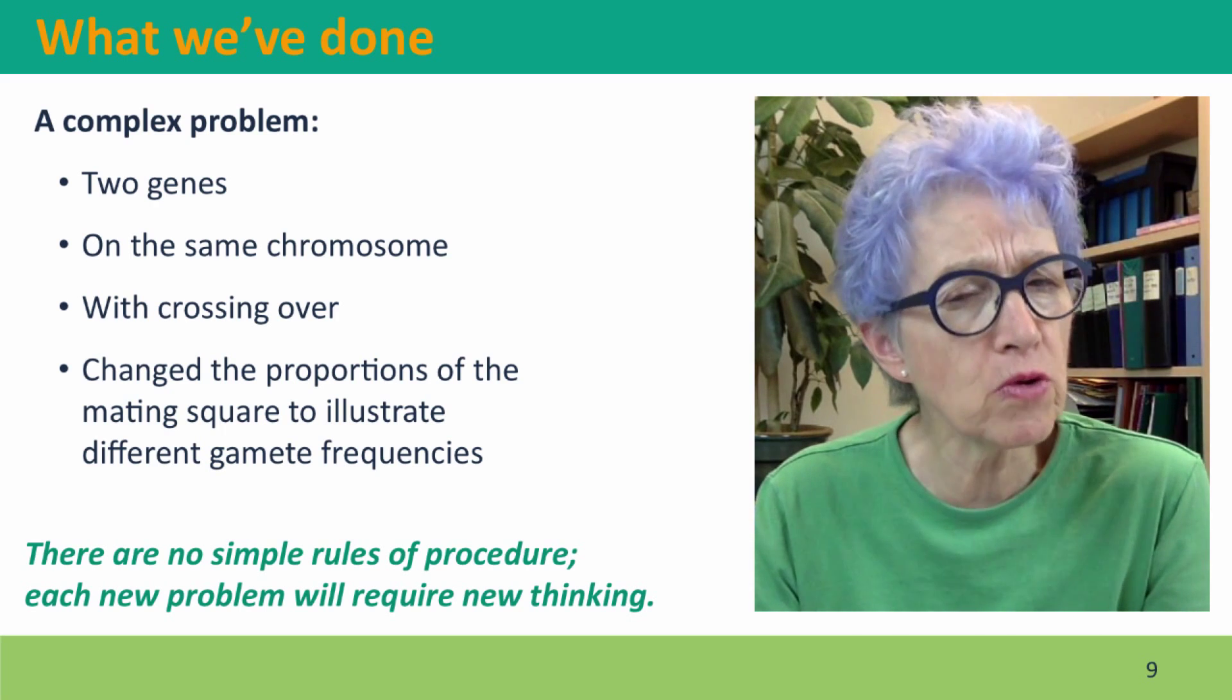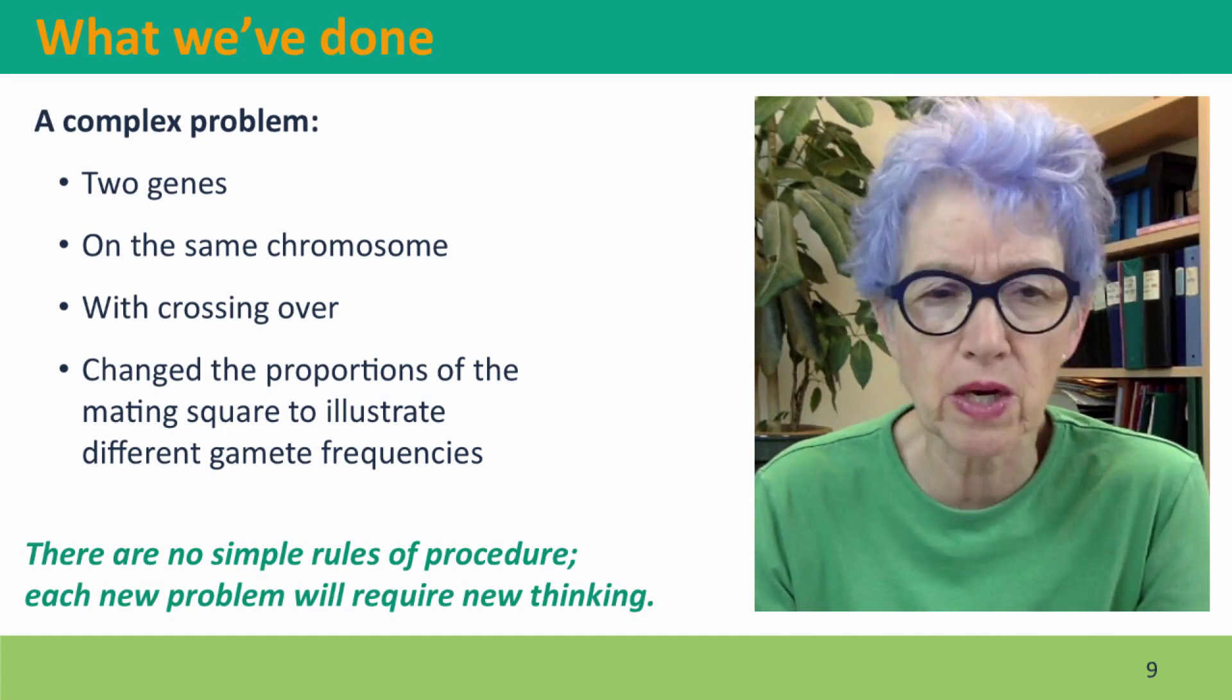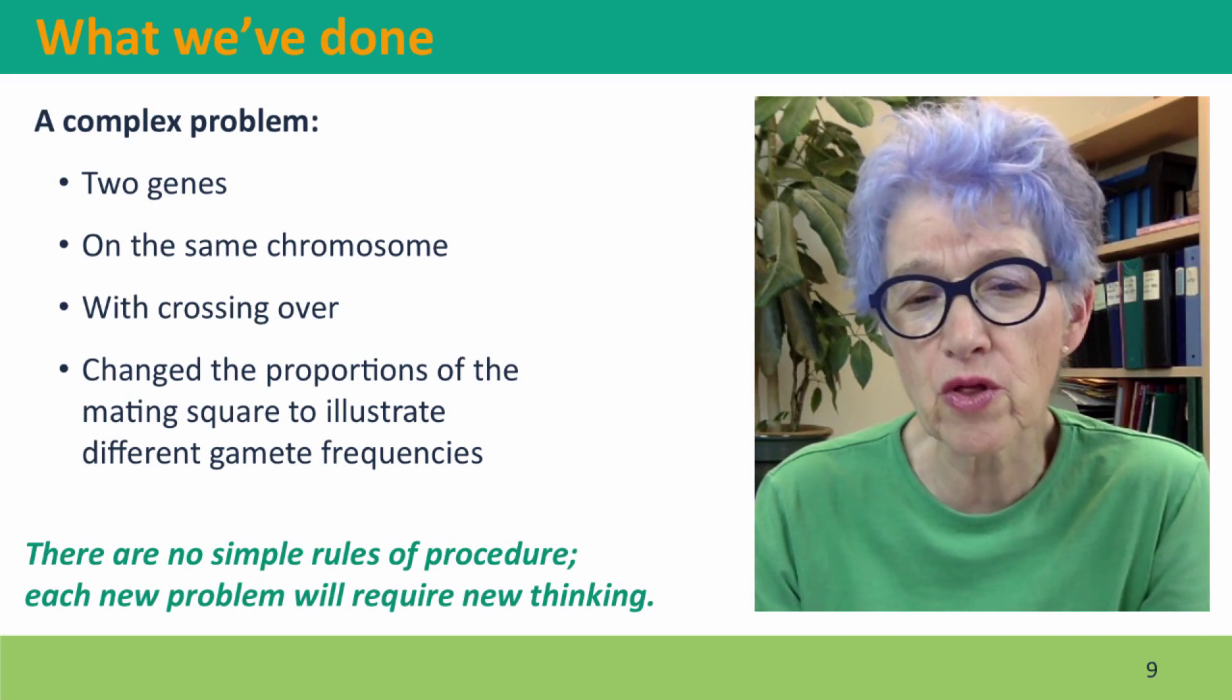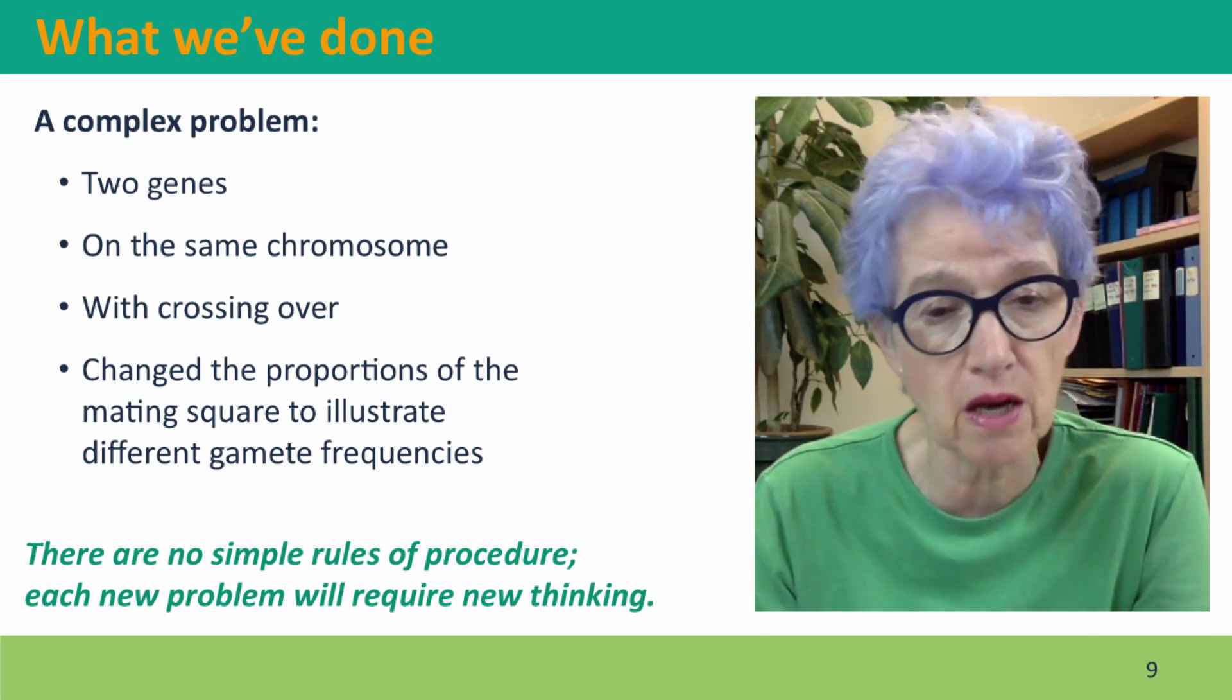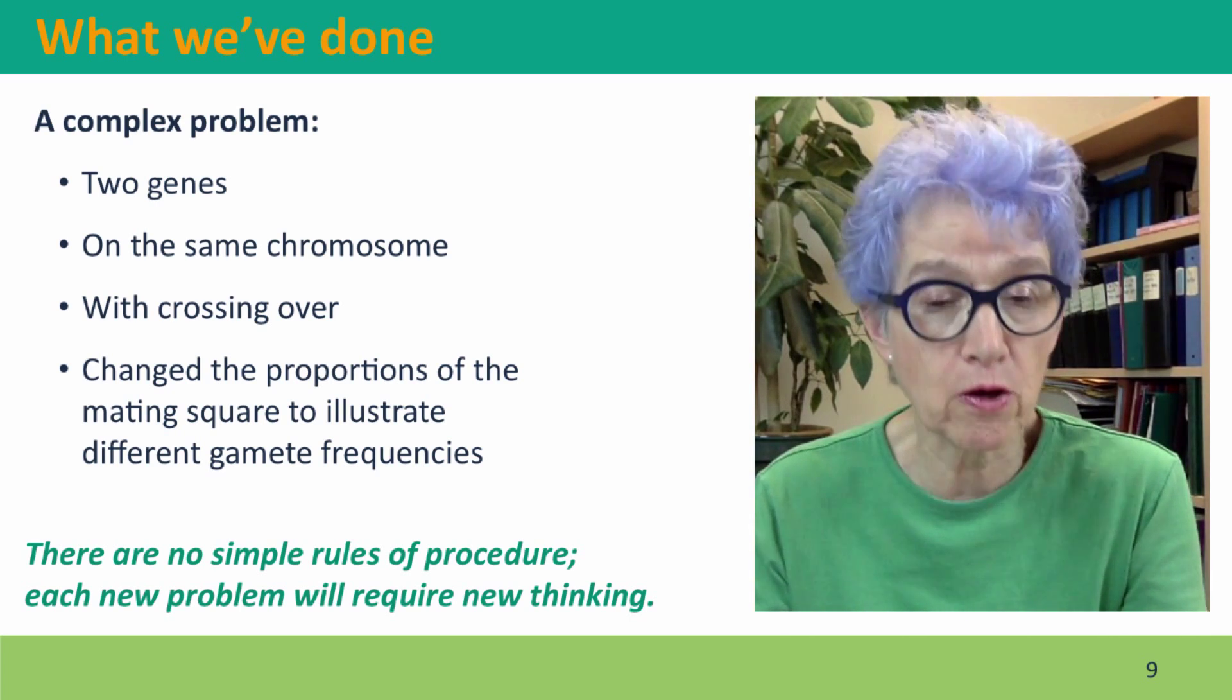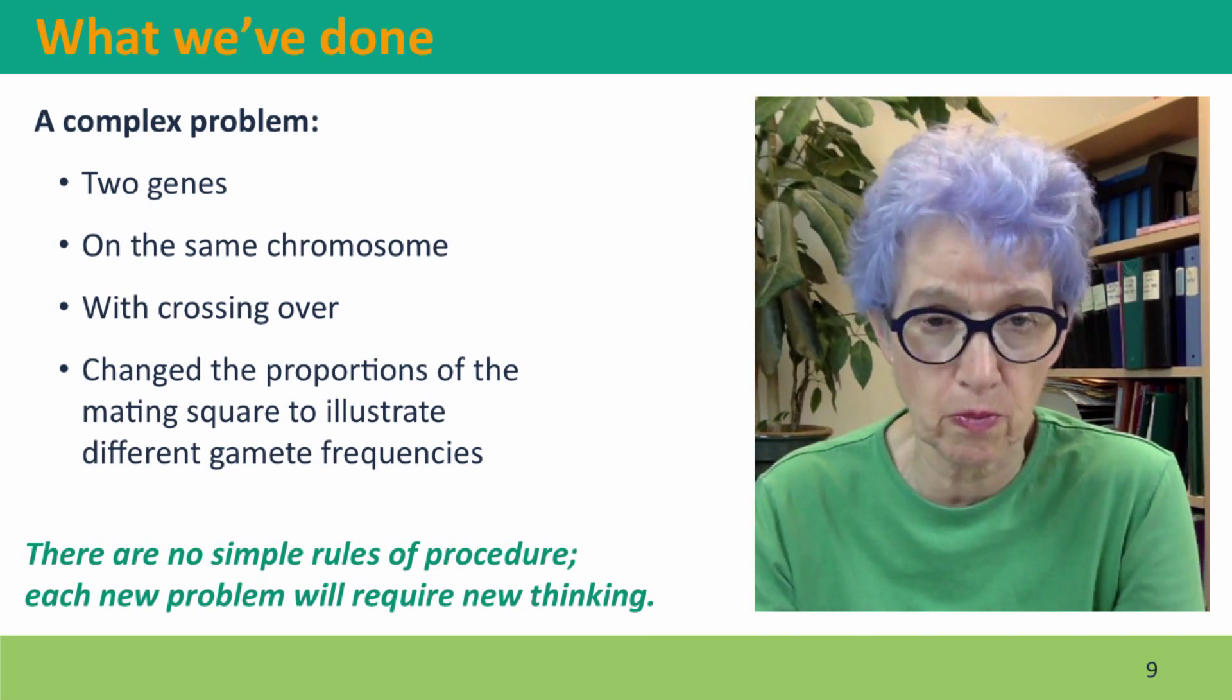And the important message that I want to leave you with is you might think, okay, I've been shown how to do this problem. I'll just memorize this pattern, and then when I see another problem just like this, I'll be able to solve it too. Well, as you'll learn, genetics problems don't really work that way. There's no simple rules of procedure. You're going to get different kinds of problems all the time, and each new problem is going to require you to think back to the fundamentals of how meiosis works, how mating works, to predict the outcome. And that's, I think, much more challenging than simply memorizing some simple rules of procedure.